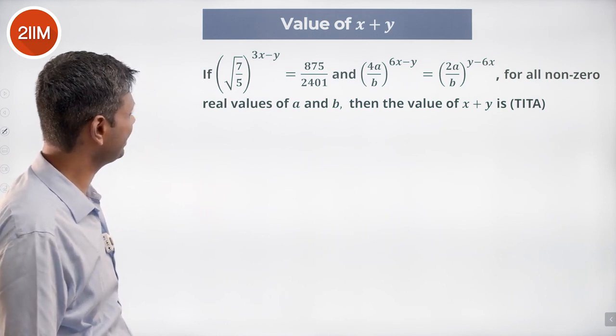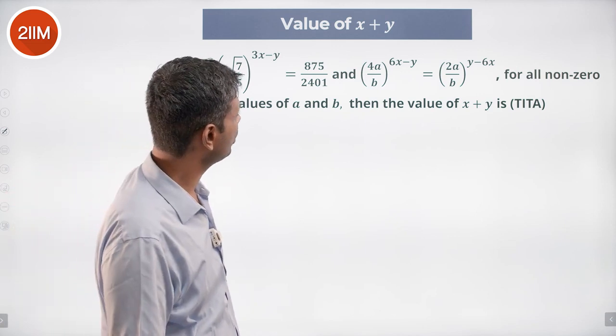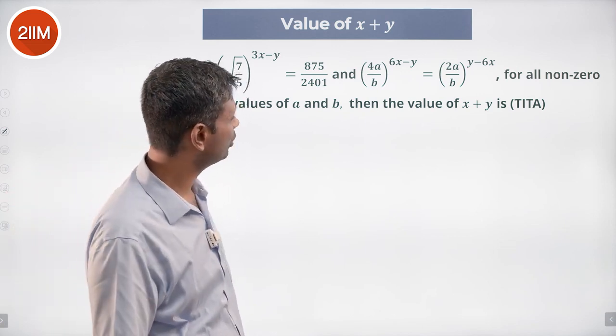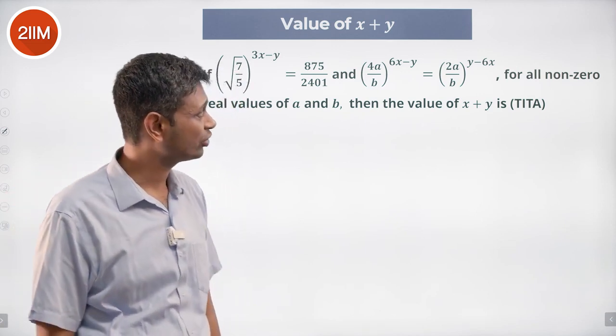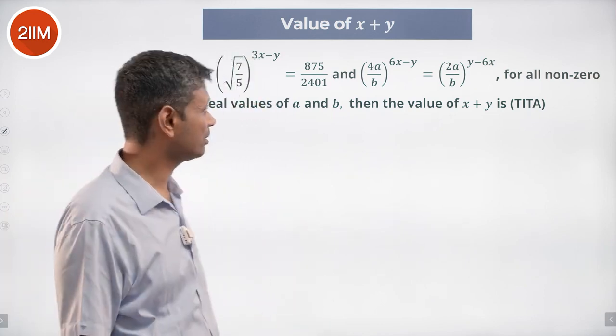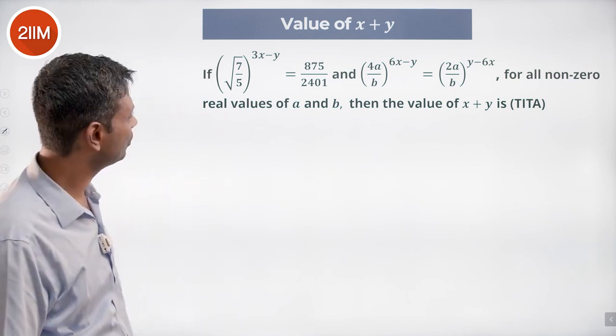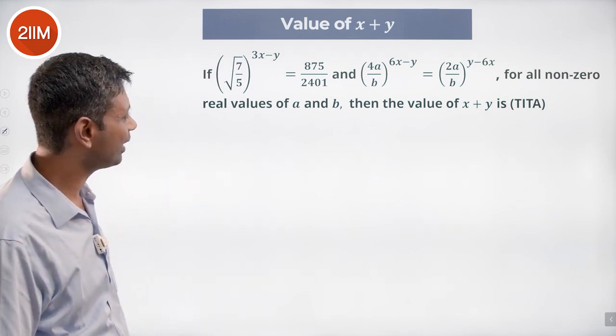Square root of 7 by 5 whole power 3x minus 5 is equal to 875 by 2401. 4a by b power 6x minus y equals 2a by b power y minus 6x. Seems like a rather tough question but it is actually not, for all non-zero real values of a and b.